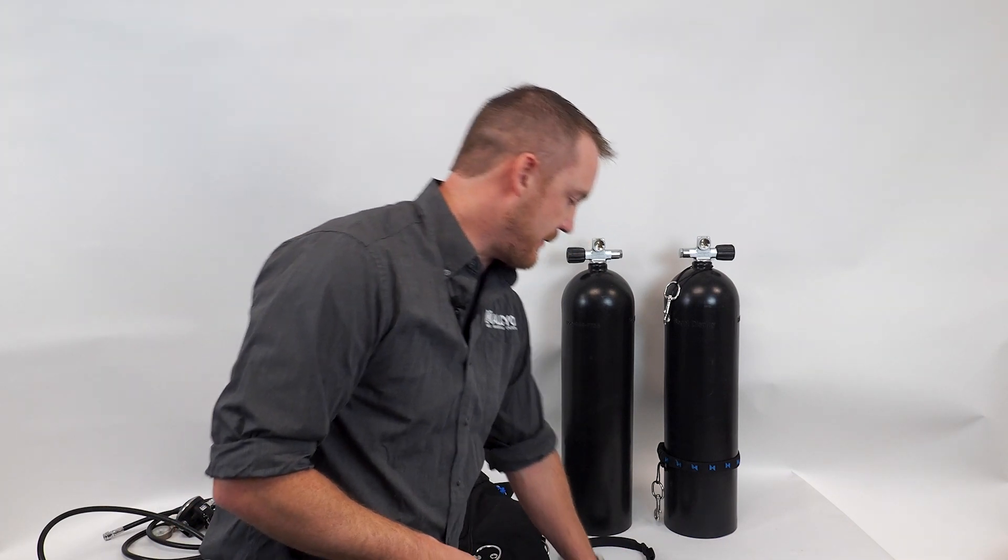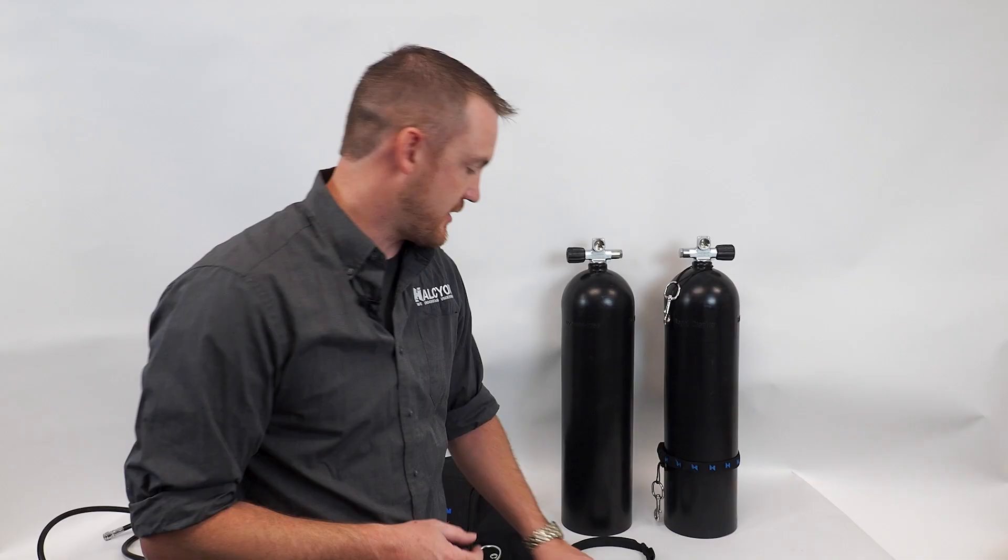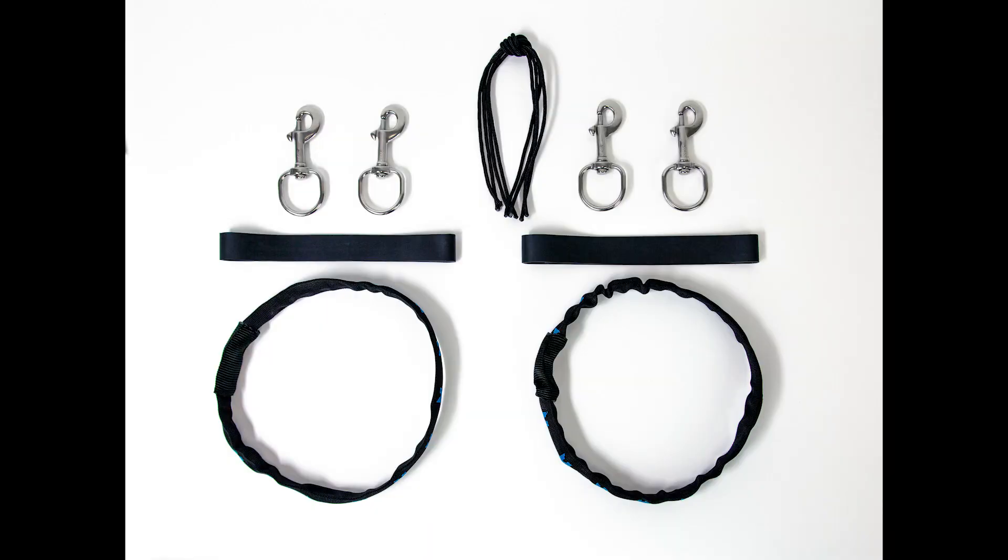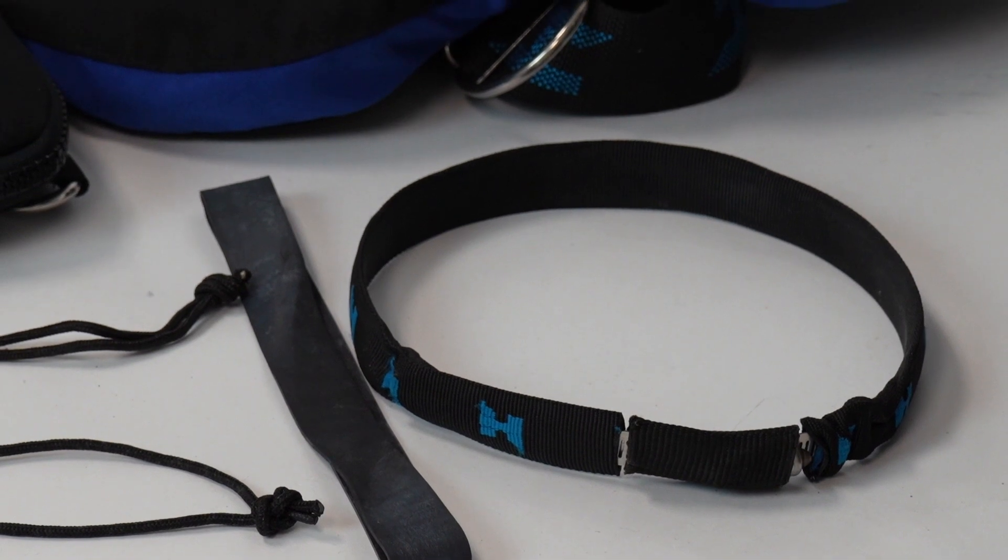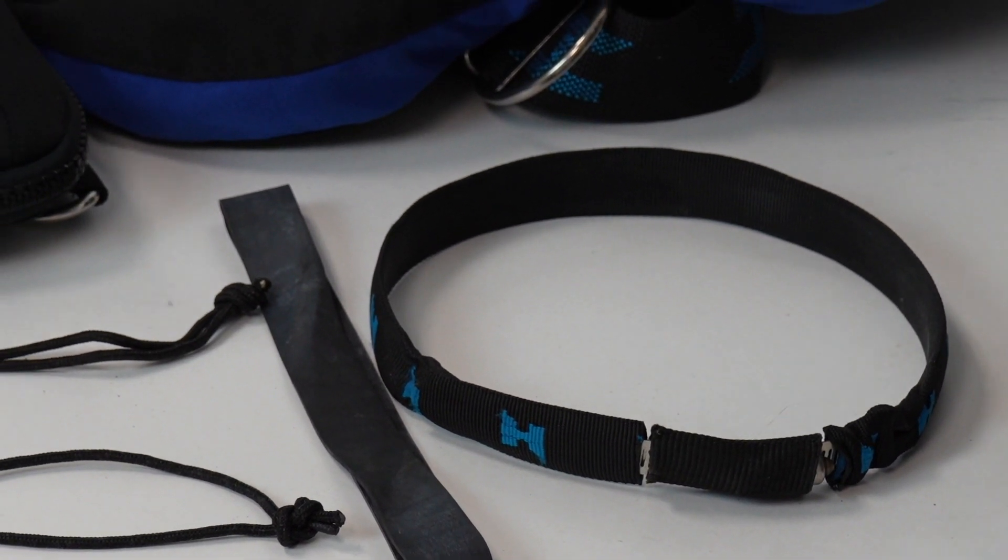Ideally, we're looking at the sidemount stage kit. You've got the clips, the lanyards to hold those clips in place, bungees or straps to hold the bands or the hoses in place when we're using it, and then finally the tank bands or cylinder bands that are going to lock everything in that we need.